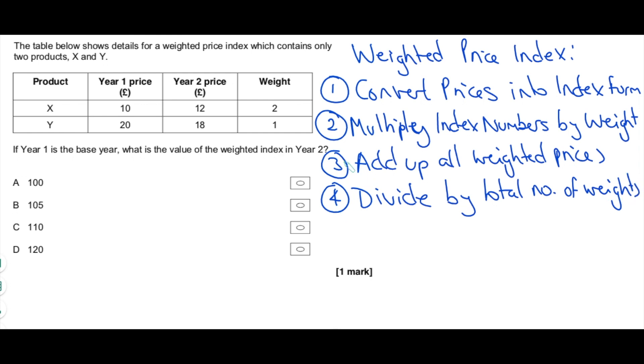Let's do that. So we need to work it out in year two. In year two, what's the weighted price of product X? Well, we need to convert 12 to an index number first. So how do we do that? Remember, we take the raw number 12, divide it by the base year raw number, which is 10, and then multiply by 100. So that's going to give us 120. So we have 120 is the index price of product X in year two. Whereas for product Y, we have to convert 18 into index numbers. So it's going to be 18 divided by 20, multiply by 100. And that's going to give you 90. So perfect.